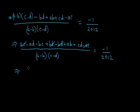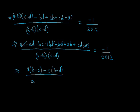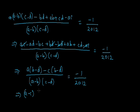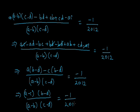Now we can take A as common from AD and AB, giving (b minus d) as a factor. From minus BC plus CD we take common the term minus C, so it again gives (b minus d) as a factor upon (a minus b)(c minus d), equal to minus 1 upon 2012. So the value of (a minus c)(b minus d) upon (a minus b)(c minus d) is minus 1 upon 2012. This is our answer.